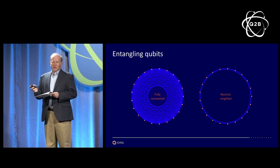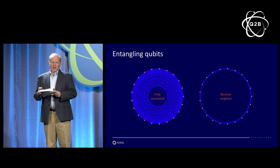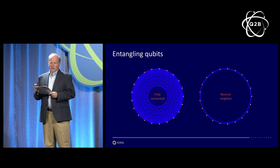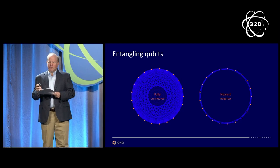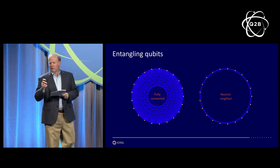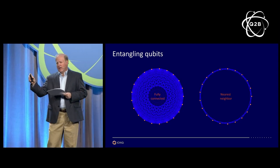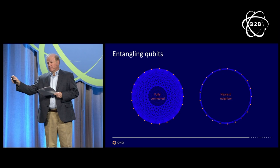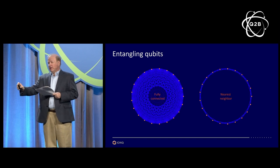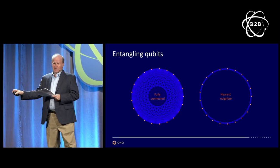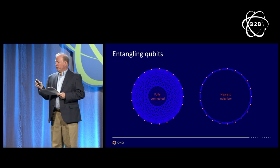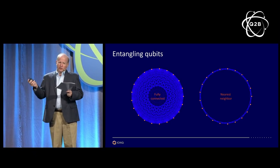So this conversation about needing millions of qubits to do something interesting — I wish people would add a caveat at the end: 'with our hardware.' At IonQ, you'll see that with 150 qubits you can do lots of interesting things.